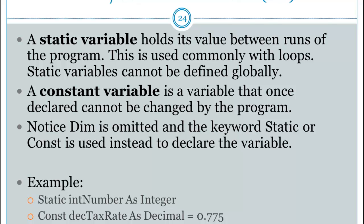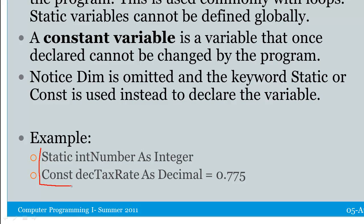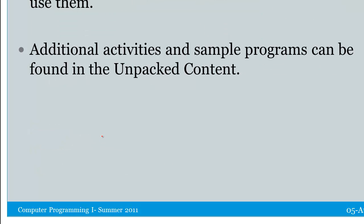A constant is a variable that cannot be changed. So here's how we declare those variables. Instead of using dim, we use these keywords, static and const. So we replace dim with those keywords. So in this lesson, we learned about variables and how to use them. And you will find additional activities and sample programs in the UNPACK content.